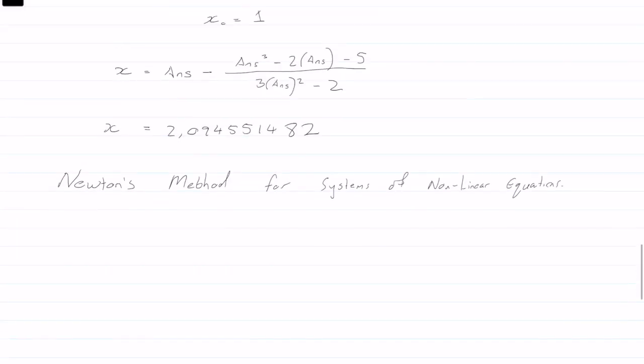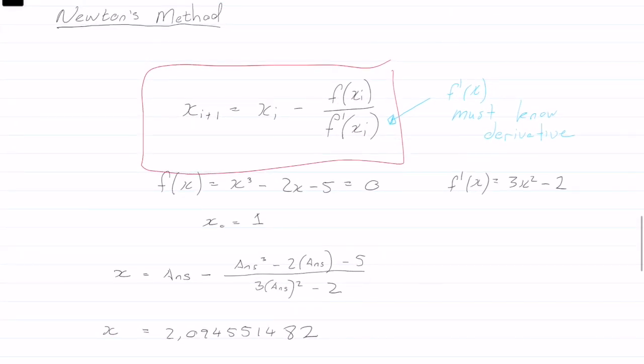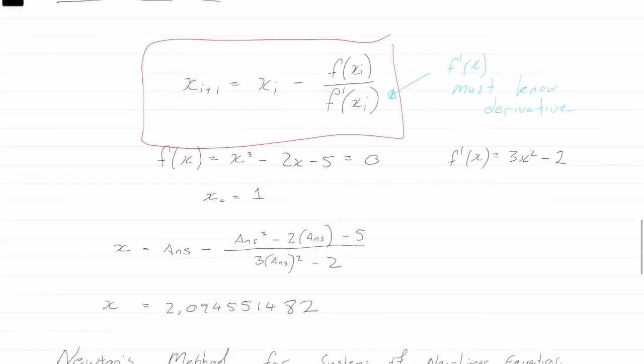Let's assume, so the original theory was only for one, to find one root, but let's assume now that we have two equations: f of x of y, which we want to equal zero, and we have g of x of y.